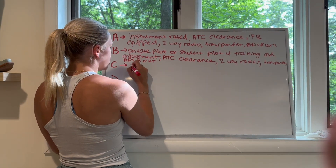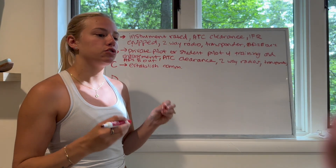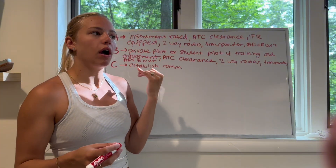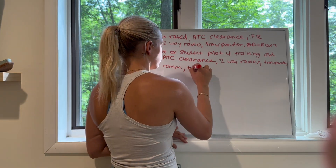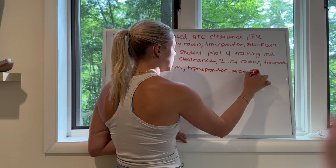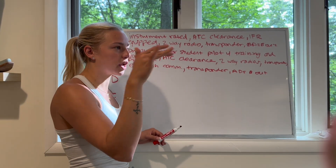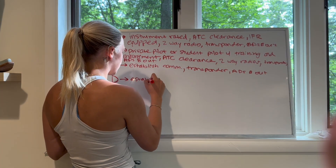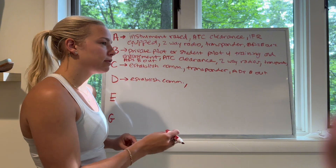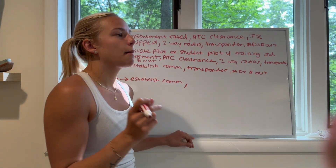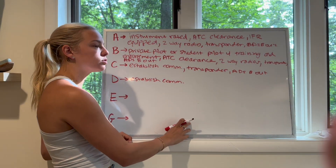For Class Charlie, you need to establish communications before entering — you don't need a clearance, but you must make contact and they must respond with your tail number. You also need a transponder and ADS-B Out, including if you're flying over Class Charlie. For Class Delta, you also need to establish communications before entering. You don't need a transponder or ADS-B Out, but if you do have a transponder it must be turned on. For Class Golf, there's no special equipment required and no special rules.